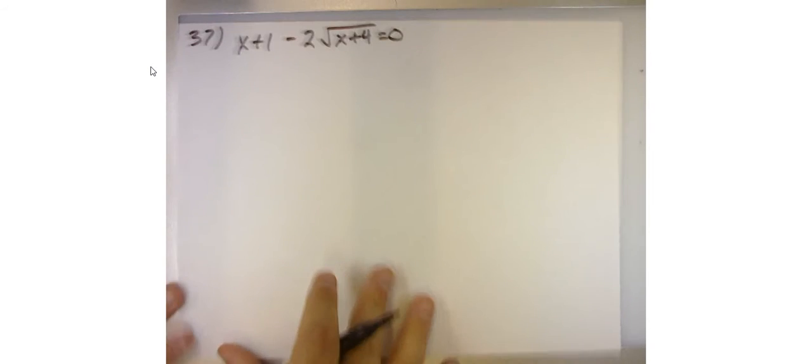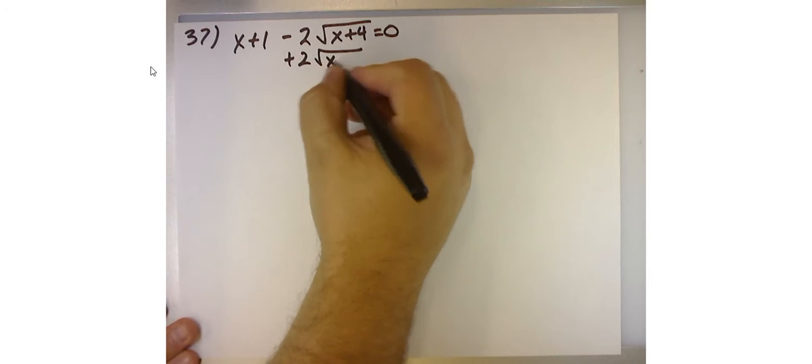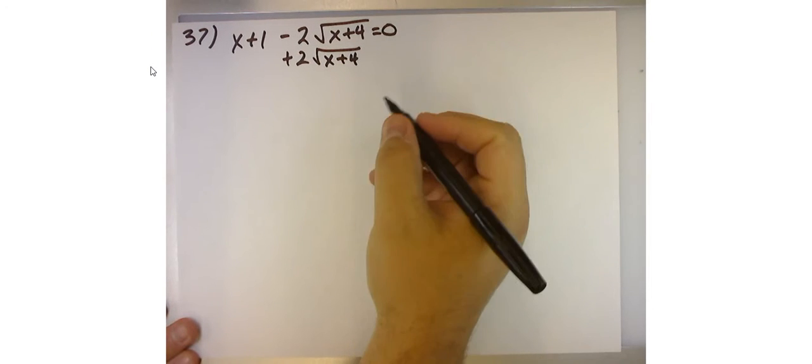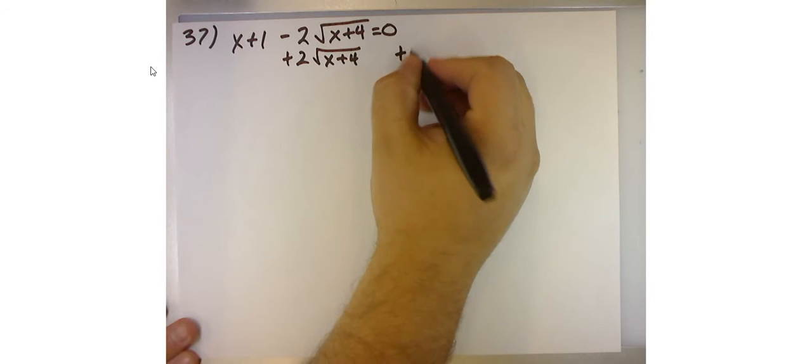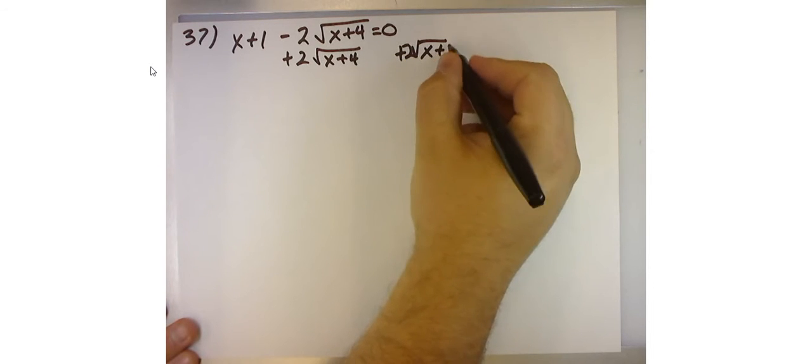So I'm going to add 2√(x+4) to both sides. The reason I want to do that is I'm going to square both sides and then bring some stuff back.